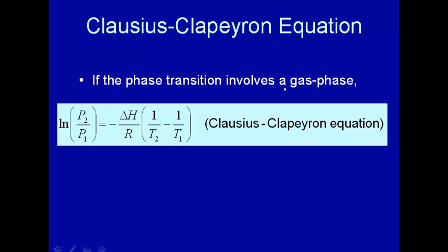If the phase transition involves a gas phase, here you get the Clausius-Clapeyron equation, which was just sort of thrown out there in introductory chemistry. For instance, calculate the vapor pressure at one temperature given the vapor pressure at another temperature and the enthalpy change of the phase transition. We're now going to derive this equation, the Clausius-Clapeyron equation.